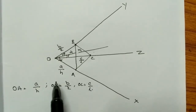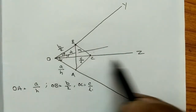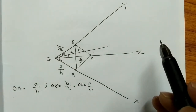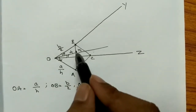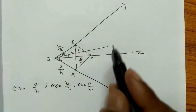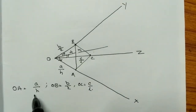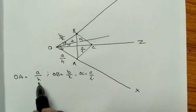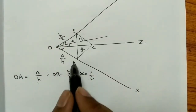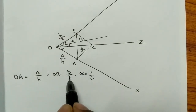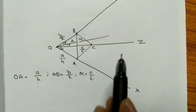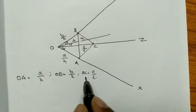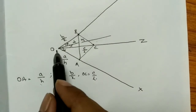If it were a vector, I would write OA as ai + bj + ck, where i, j, k are unit vectors along the x, y, and z axes. But here the plane is perpendicular to the axis. That is why I took the parameter HKL in the denominator — h indicates perpendicular to the x-axis, k perpendicular to the y-axis, and l perpendicular to the z-axis.